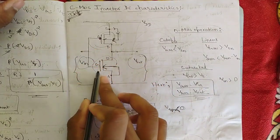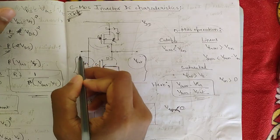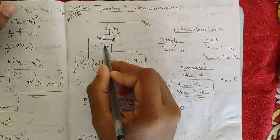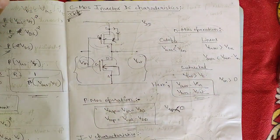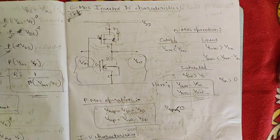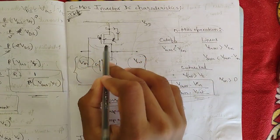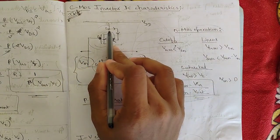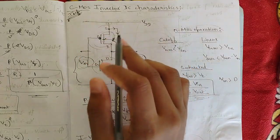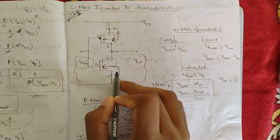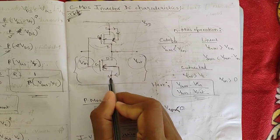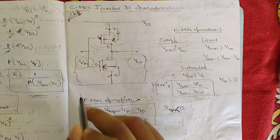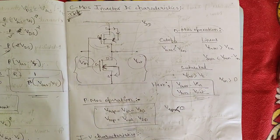Both gate terminals are shorted, giving one common input VIN, and both drain terminals are shorted giving one common output VOUT. Regarding the body effect discussed in the previous video: for the PMOS transistor the body terminal is connected to the source terminal, tied back to VDD. For the NMOS transistor the body terminal is also connected to its source terminal, but tied to ground.